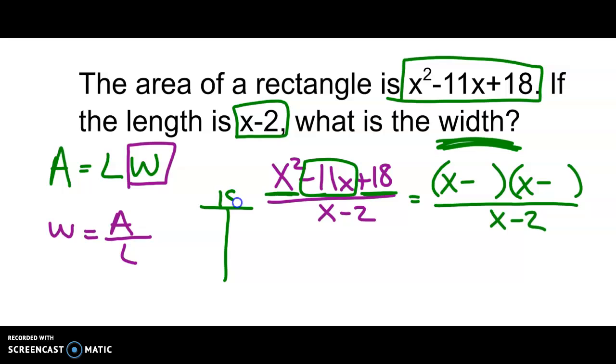So to give me a positive 18 it would be negative 1 times negative 18, negative 2 times negative 9, or negative 6 times negative 3. Then we just need to see which of those add up to negative 11. In this case it's negative 2 and negative 9.